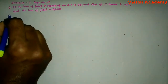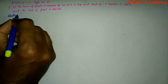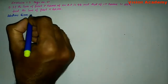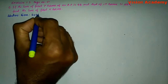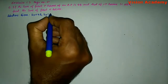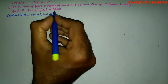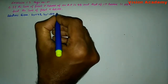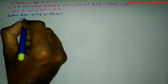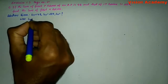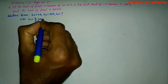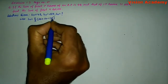Let us find the solution for the given problem. Here, let us write the given information first. S7 is equal to 49, S17 is equal to 289, and Sn is equal to what? We know that Sn is equal to n divided by 2 into 2a plus n minus 1 into d.